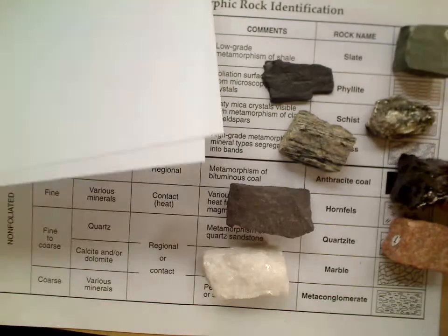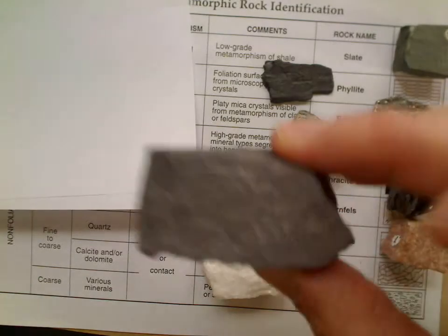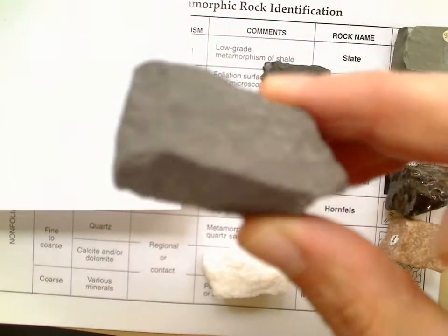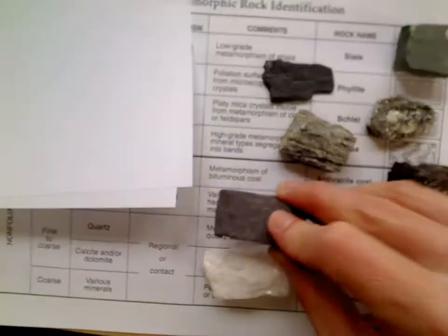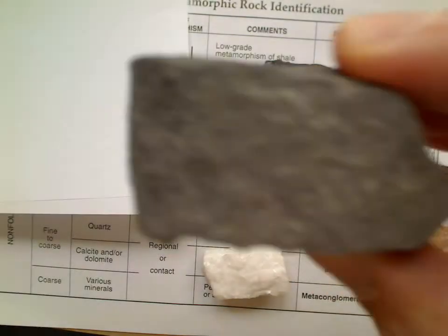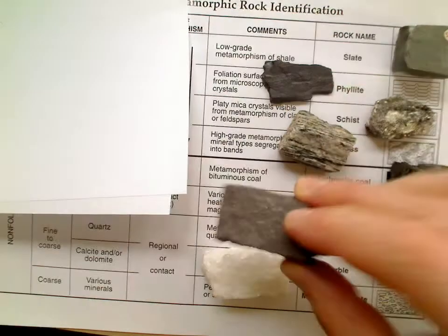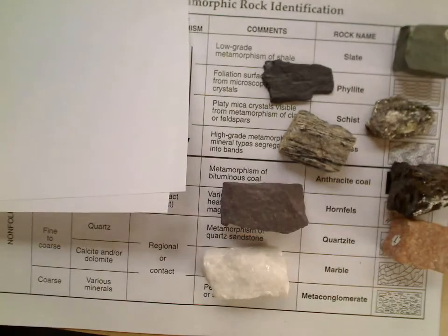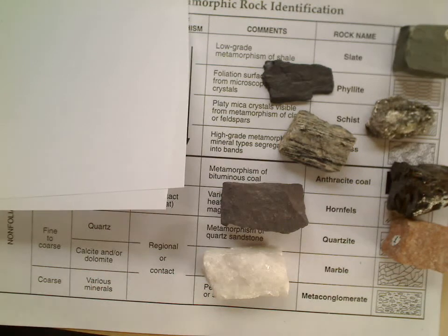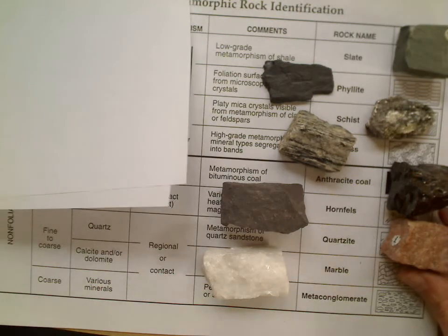Hornfels is very boring — it's hard to tell from many other rocks. It comes from contact metamorphism, basically from lava touching a rock and partially melting it. There's not much to identify about it visually.